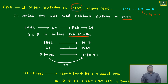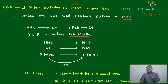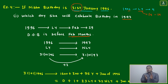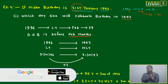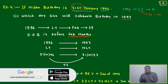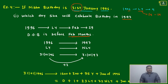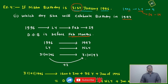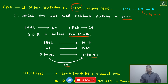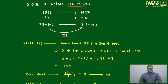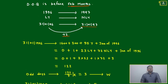Moving from 1996 to 1997 is moving from a leap year to a non-leap year. We need to check whether the date is before or after February. If it is before February, the calculation is different. Since 31st January is before February, we add 2 extra days to find the birthday day in the next year.